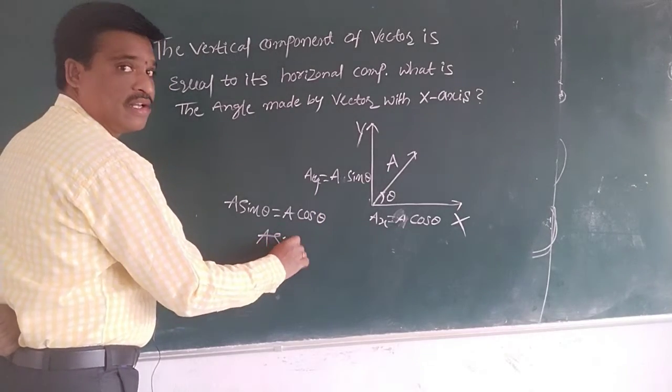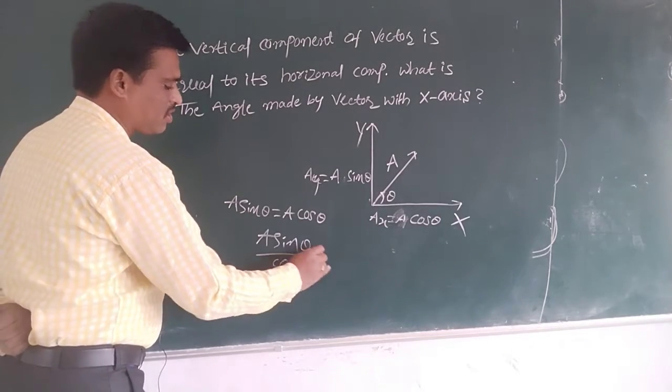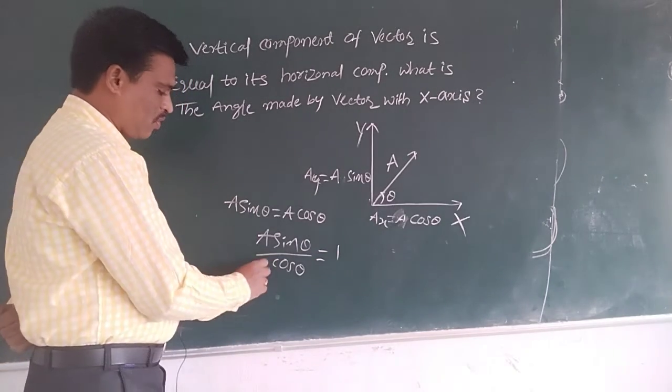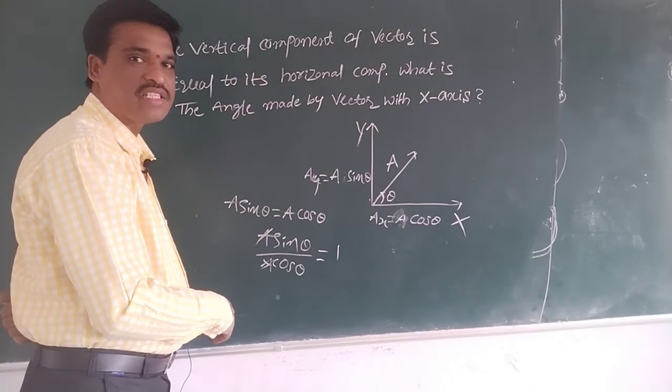Here, A sin theta equals A cos theta. A will be canceling A, so sin theta by cos theta equals what?